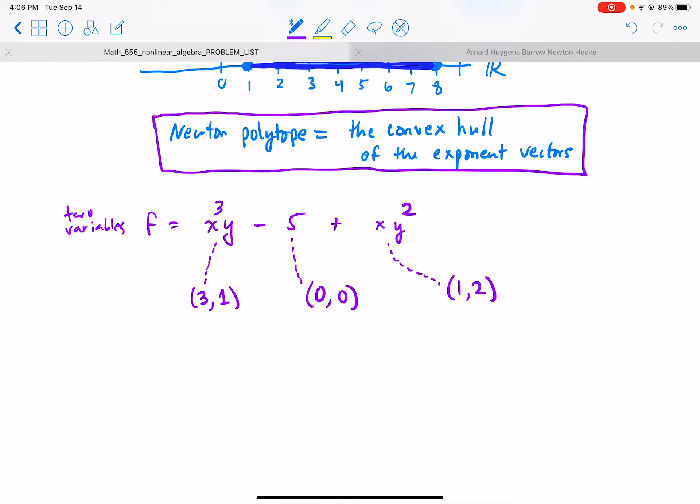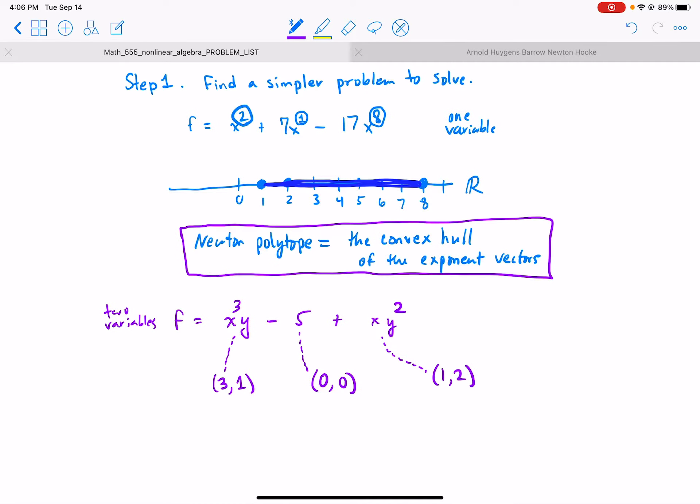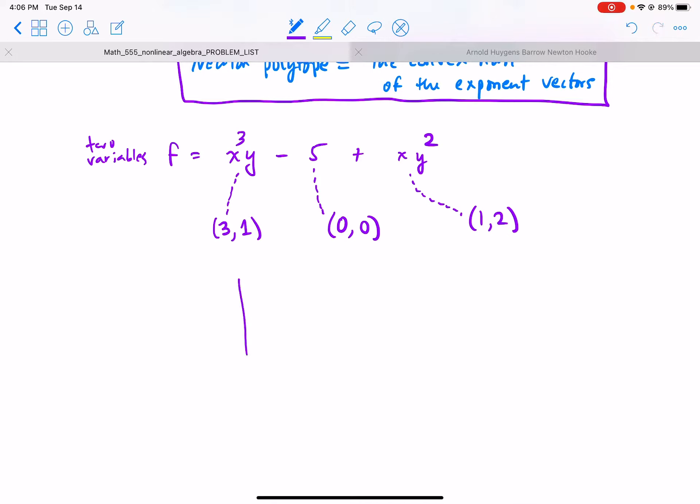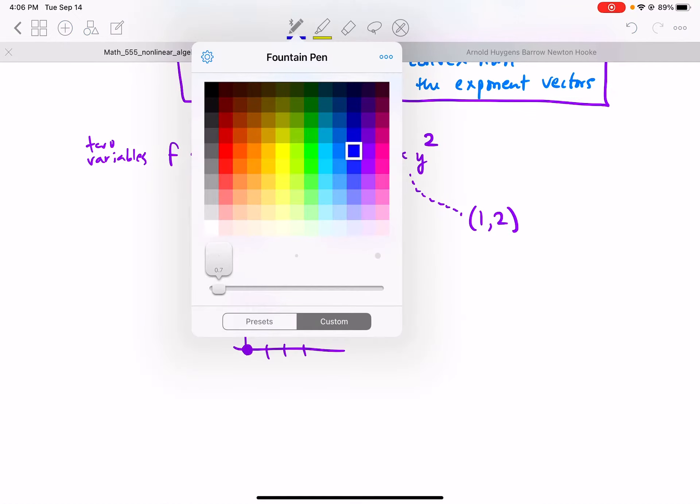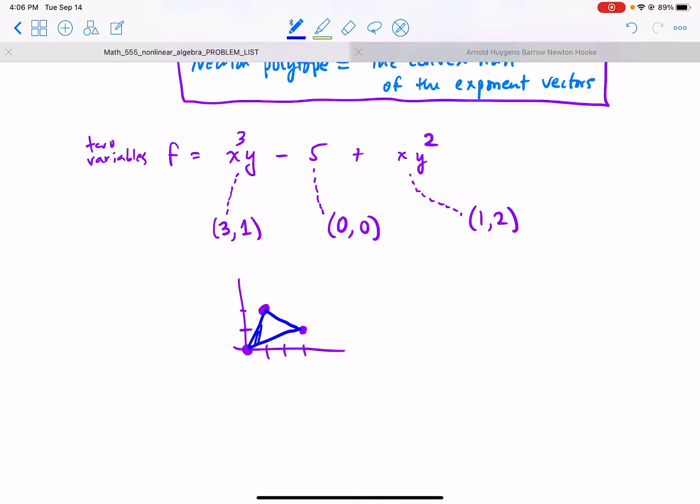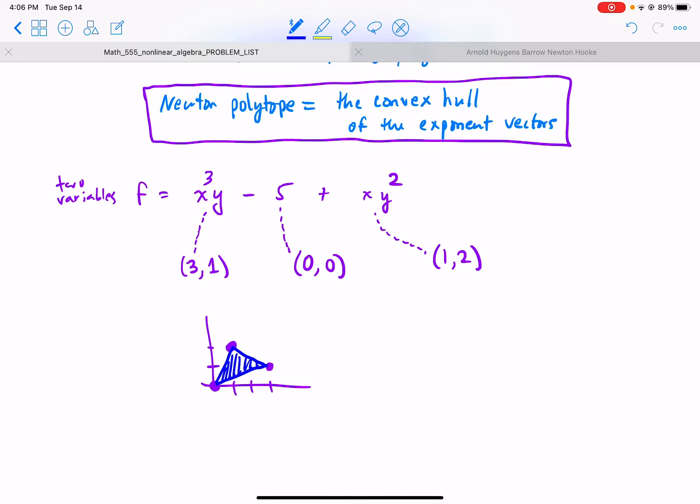Now I think you know what exponent vectors is better than when we just looked at the one-dimensional case. Sometimes the two-dimensional case is the easiest. But anyway, let's visualize this. Zero zero is here, three one is here, and one two is here. So now what's the Newton polytope? It is the convex hull of those three points, so the Newton polytope is this triangle.